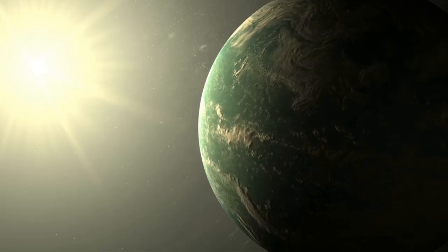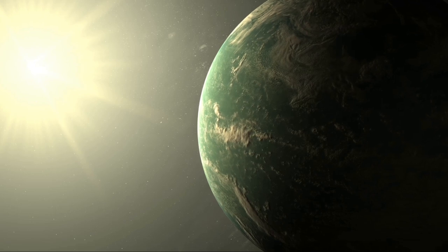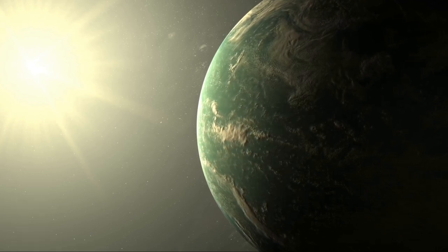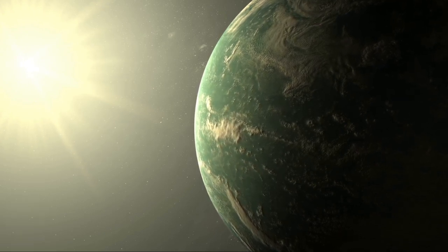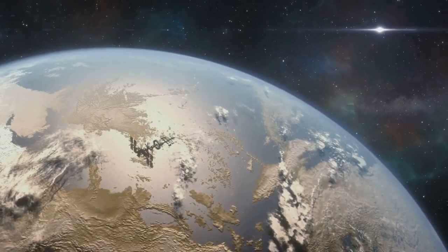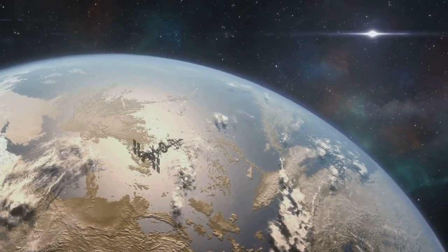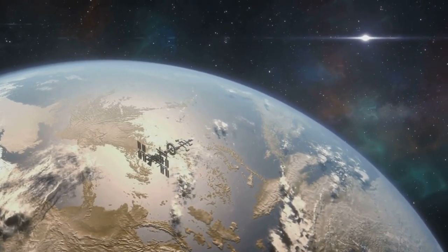Following Proxima Centauri b, we have the fascinating system of TRAPPIST-1, boasting not one, but seven Earth-sized planets. This peculiar system, named after the telescope that discovered it, has its planets huddled closer to their star than Mercury is to our Sun.